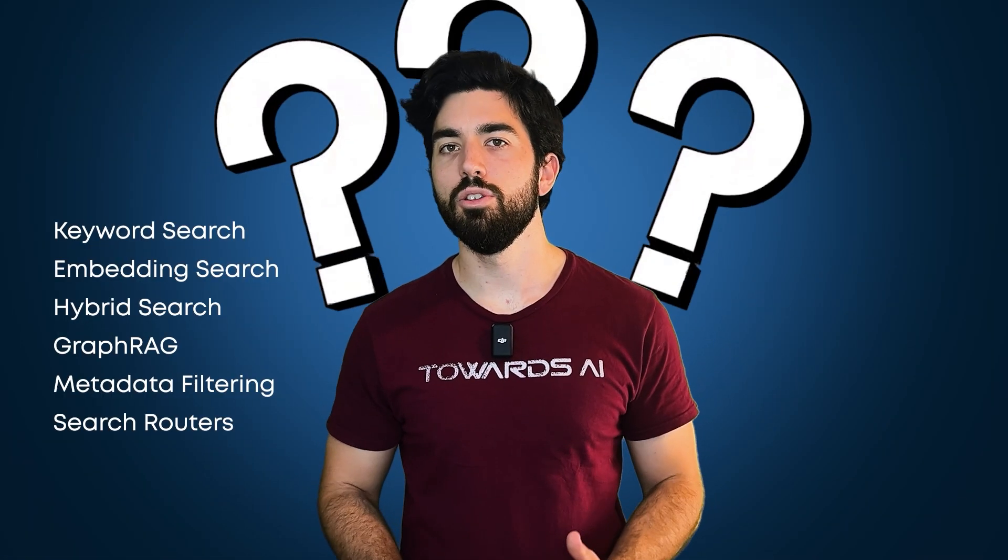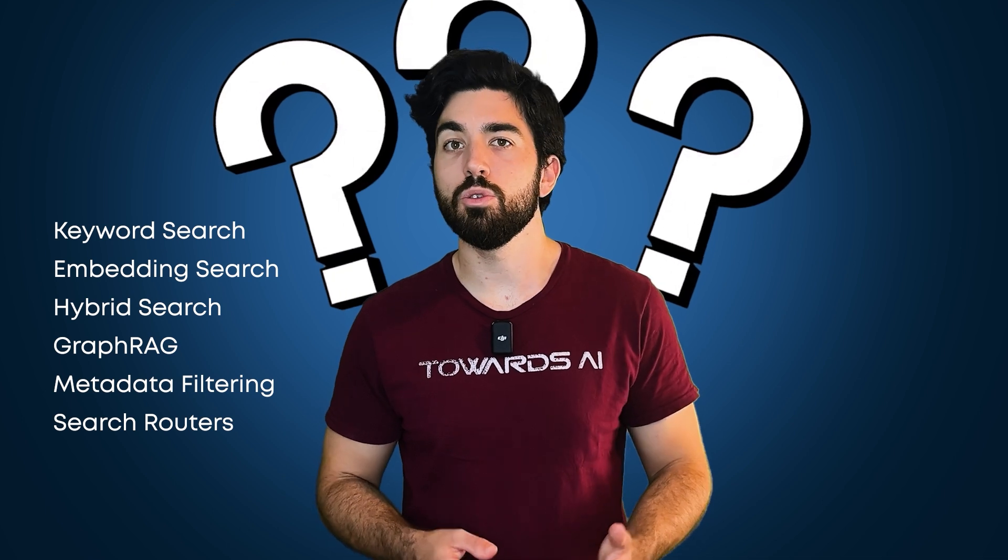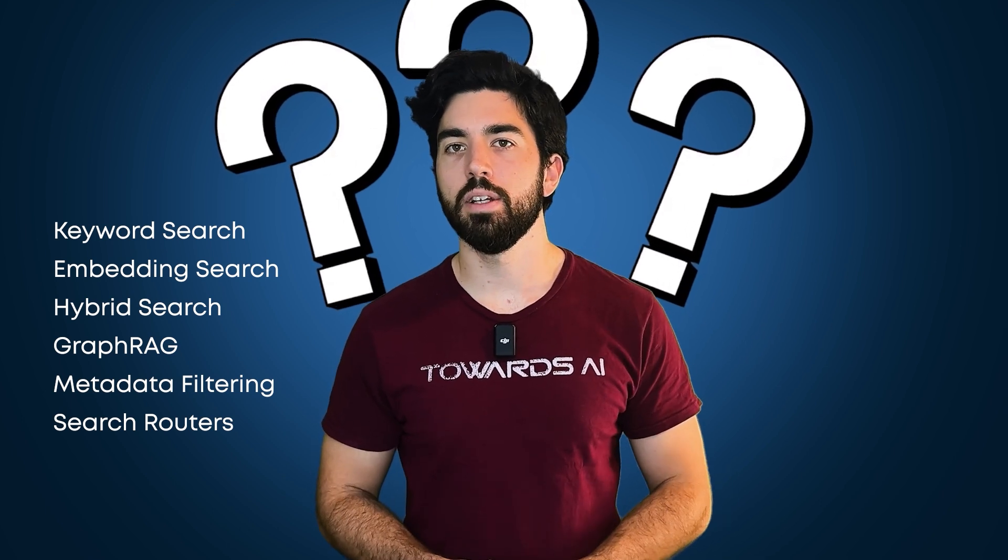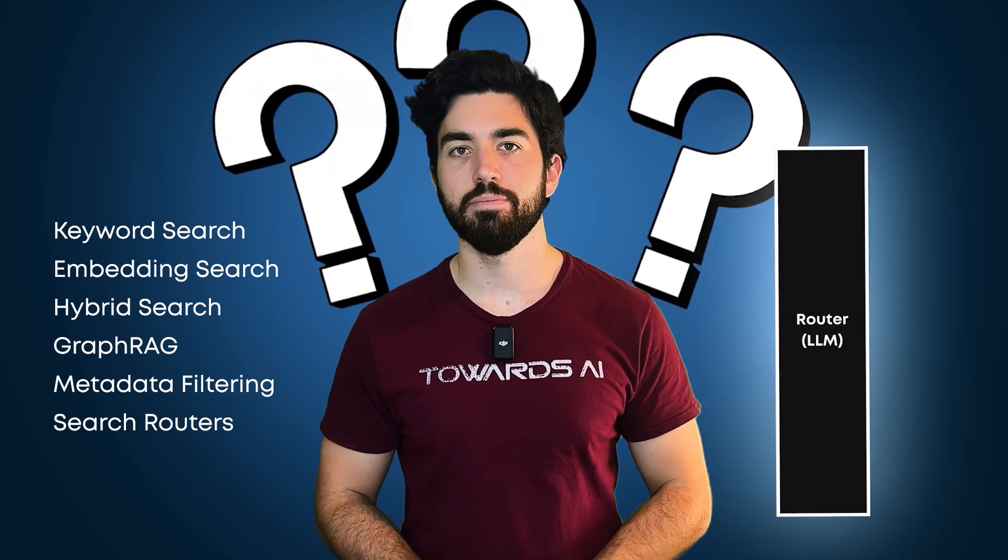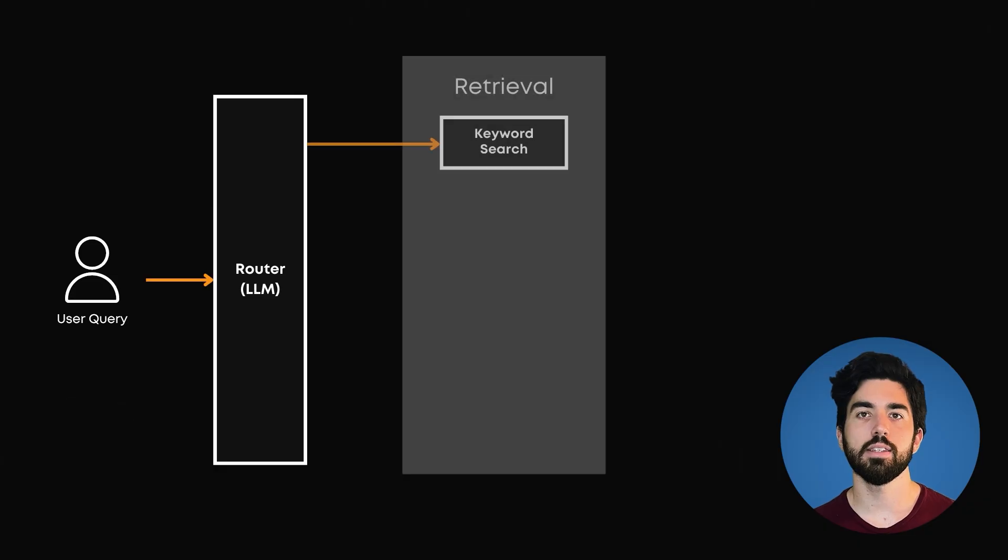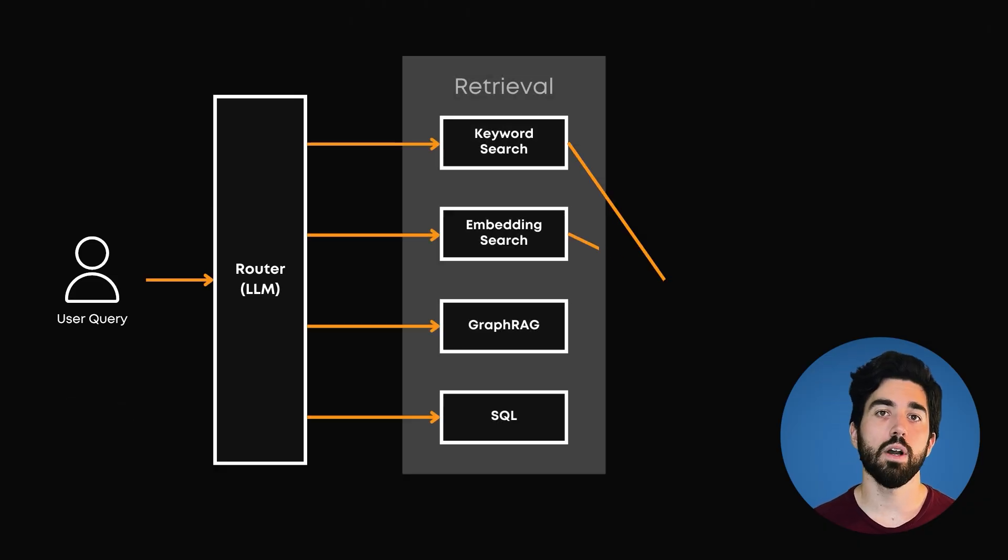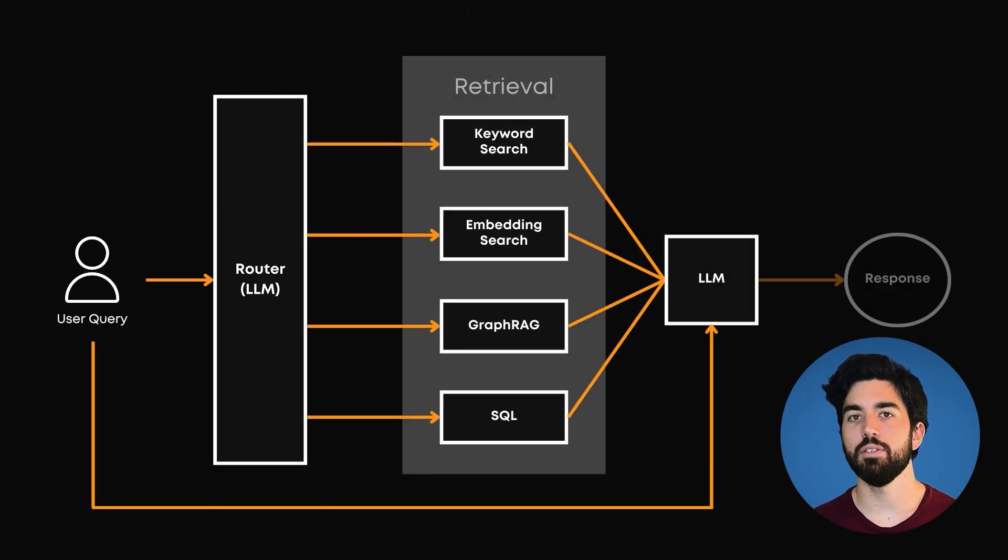But then, how do you know which one to use? Can you just use one or use all of them? That's where a router comes in. A router chooses the best search method based on what you are asking and what kind of data you have.